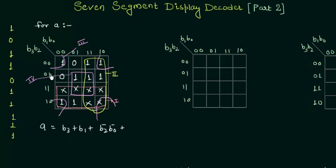And the last group, that is our fourth group, gives us b2 and b0. So this is A.